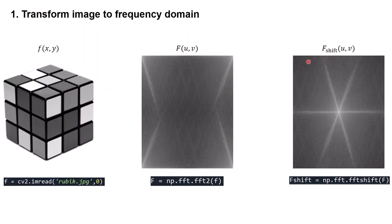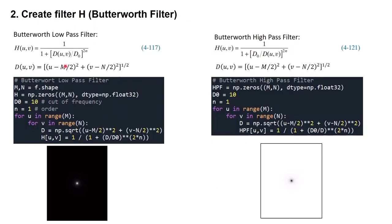The second step is to create the Butterworth filter. On the left is the Butterworth low pass filter in Python, and on the right is the Butterworth high pass filter. First we get variables M and N, which are the number of rows and columns, using the .shape method. Next we create a variable H using np.zeros — this will be our filter. We set D0 to 10 and N to 1; you can change D0 to any positive number as well as N. Then using a for loop, we calculate the value of D and fill variable H using the Butterworth low pass filter formula. We do the same process for the Butterworth high pass filter.